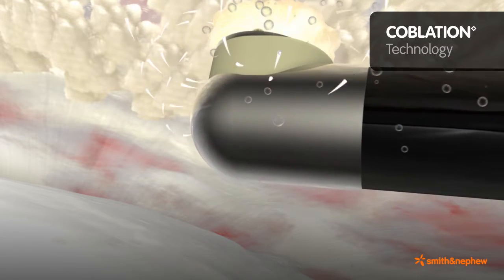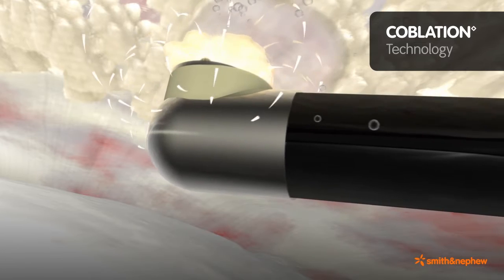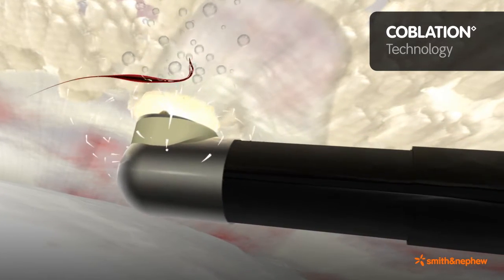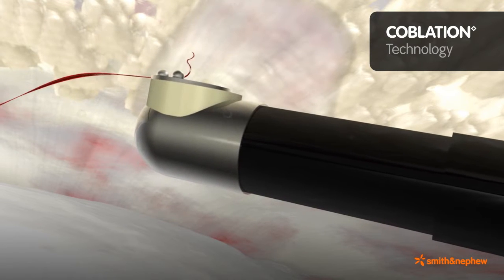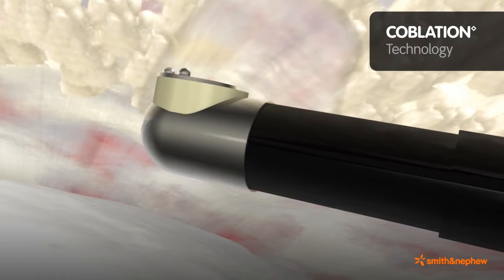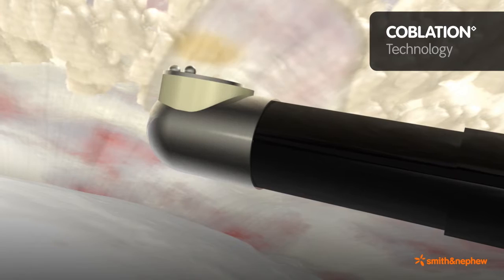The plasma is formed by creating a high-density energy field within an electrically conductive fluid, such as saline. Localized heating of tissue coagulates bleeders to maintain a clear field of vision.